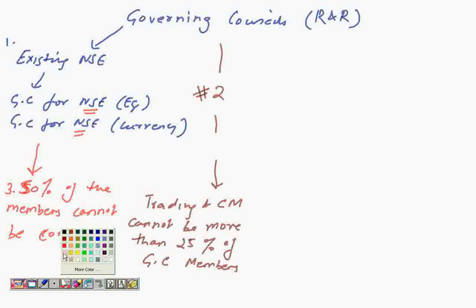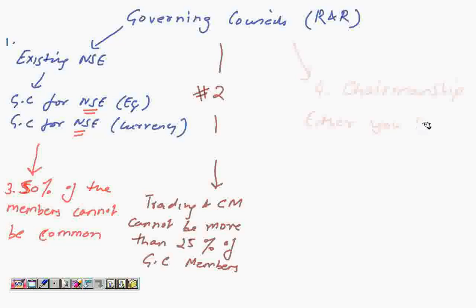Another very important point — the fourth — is on chairmanship. What this means is that a trading member should not ideally be chairman of a governing council. And if a trading member is a chairman, then he or she would not be allowed to trade. So either you lose out on trading, or you become a chairman — both cannot happen simultaneously.